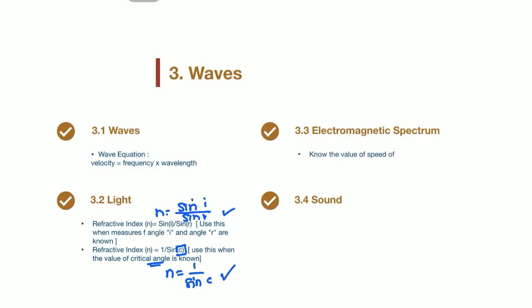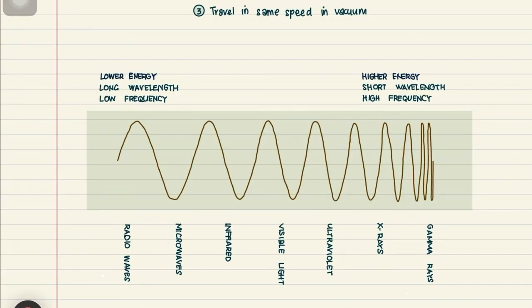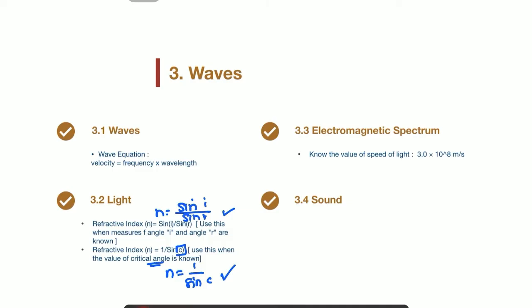Next, for the electromagnetic spectrum, it encompasses various types of waves. So make sure you know all the types of waves, which is microwave, infrared, visible light, UV, X-ray and gamma ray. Though this topic doesn't involve specific formulas, make sure you know the value of speed of light, which is 3 times 10 to the power of 8 meters per second.